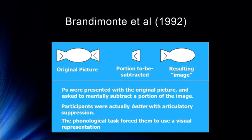In this clever study, participants were given a picture of something like this — this is my version, but this is what I came up with. They were told to mentally subtract a portion of it, and then asked what does it look like. They weren't shown the resulting image, but that's what they were supposed to picture in their head. What's really interesting is that participants were actually better with articulatory suppression — saying 'the, the, the' over and over again. Doing that pushed participants into a visual strategy where they couldn't talk their way through it because they were busy with the articulatory suppression task.